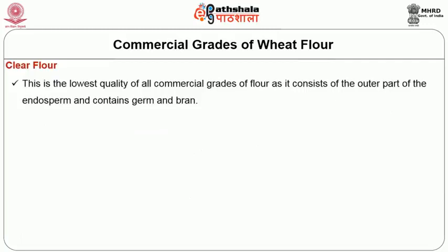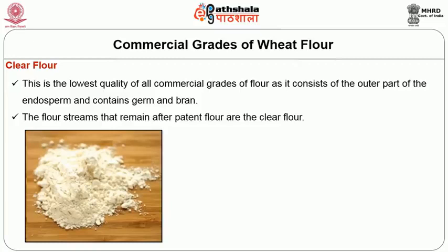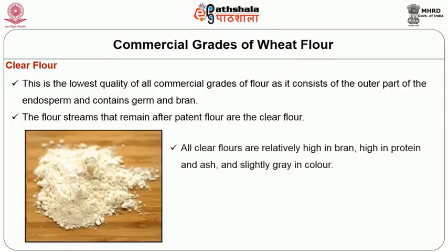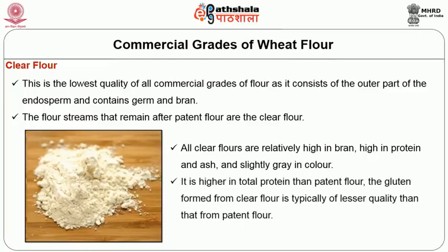Clear flour is the lowest quality of all commercial grades of flour, consisting of the outer part of the endosperm and containing germ and bran. The flour streams that remain after patent flour are the clear flour. All clear flours are relatively high in bran, high in protein and ash, and slightly grey in color. While higher in total protein than patent flour, the gluten formed from clear flour is typically of less quality. Hence, clear flour is less expensive than patent flour.